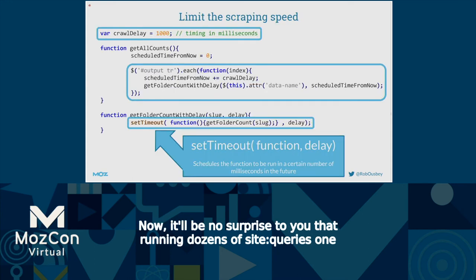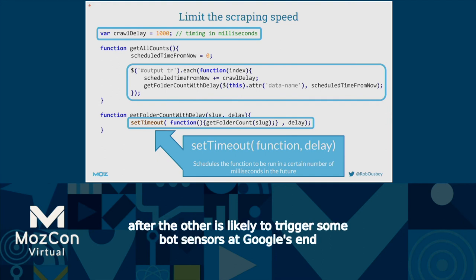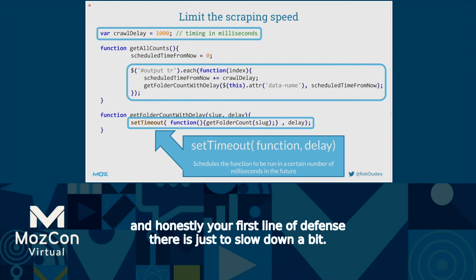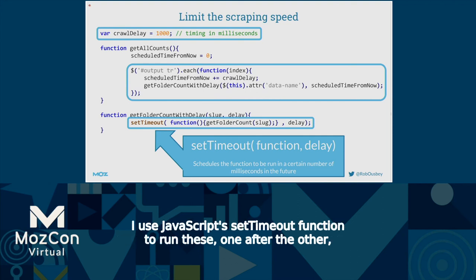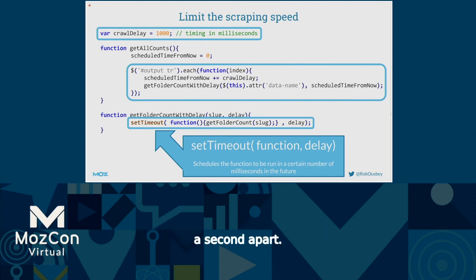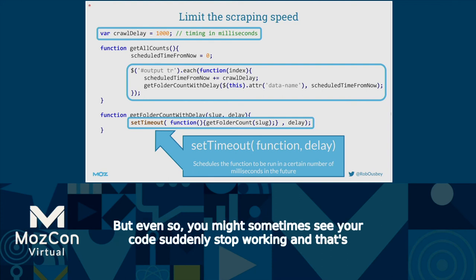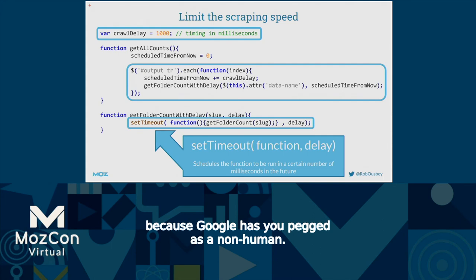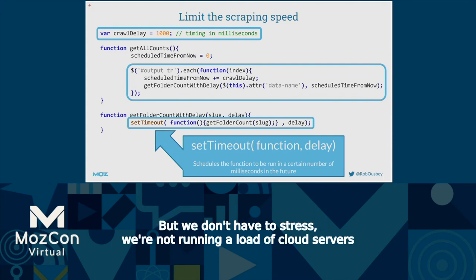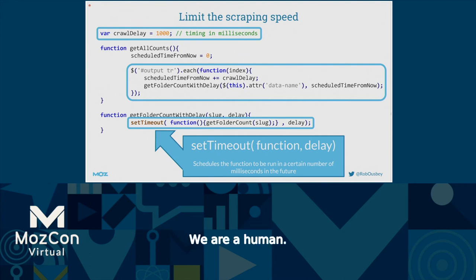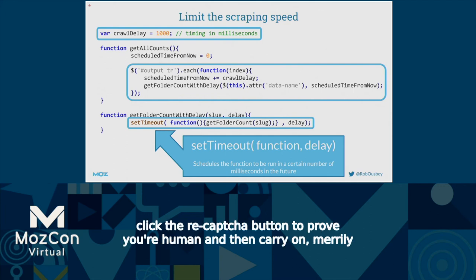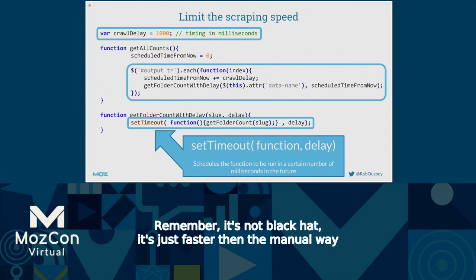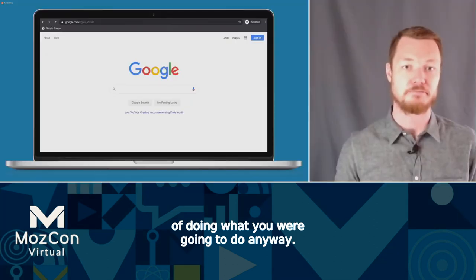Running dozens of site:colon queries one after the other is likely to trigger bot sensors at Google's end. Your first line of defense is just to slow down — I use JavaScript's setTimeout function to run these one each second apart. But if Google pegs you as non-human, don't stress. We're not running cloud servers churning through IP addresses — we are a human. Our browser has all the fingerprints of a regular user, so we can pass a CAPTCHA with no problem. If you get blocked, just open another tab, go to Google, click the reCAPTCHA button, and carry on collecting the data you want.